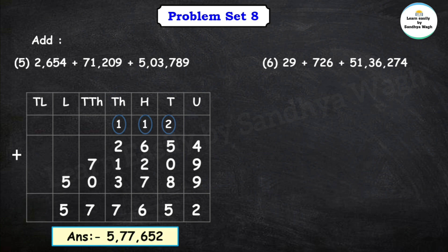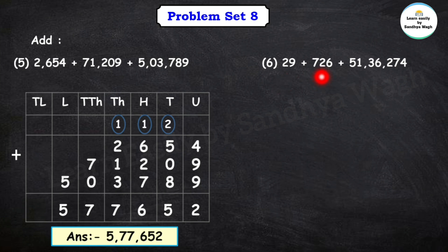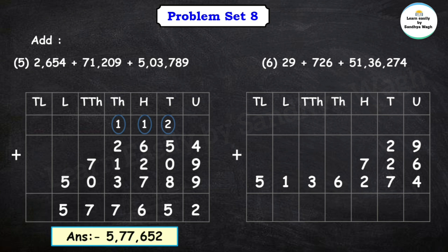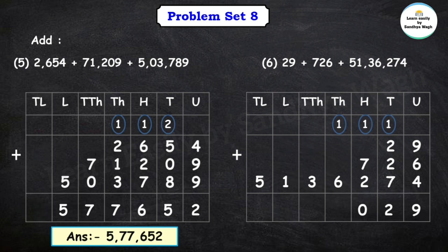Next question: 29 plus 726 plus 51 lakh 36,274. Let's add these three numbers. 9 plus 6 plus 4 is 19, write 9 in units place, carry 1. 2 plus 2 plus 7 plus the carry is 12. Then 7 plus 2 is 9, plus carry is 10, write 0 carry 1. Thousands: 6 plus carry is 7. Then 3 as it is, then 1 and 5. So our final answer is 51 lakh 37,029.